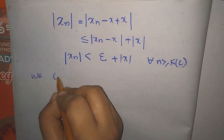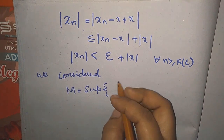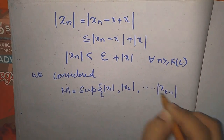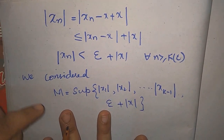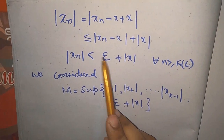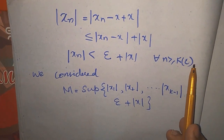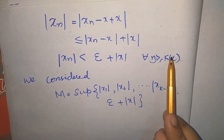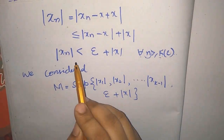Ab hum ne khud se karna hai — we consider M equal to supremum of {|x1|, |x2|, ..., |x_{k-1}|, epsilon + |x|}. Maine is M ko inaka supremum kyun liya? Ek cheez agar aap yahan note karte hain — aap dekhte hain ki |xn| jo hoga woh hamesha ek epsilon value se kam aata hoga. Aur hum ne n ke baare mein kya kaha ki n is greater than or equal to k(epsilon), yaani n hamare paas aisa number hoga jo bada hoga ya equal ho sakta hai is k ke. Yaani yahan jo bhi number hoga — n toh hamesha isse bada hi haega — it means ki isse jo chhote wale numbers honge, yeh statement ke liye satisfy kar raha hai.